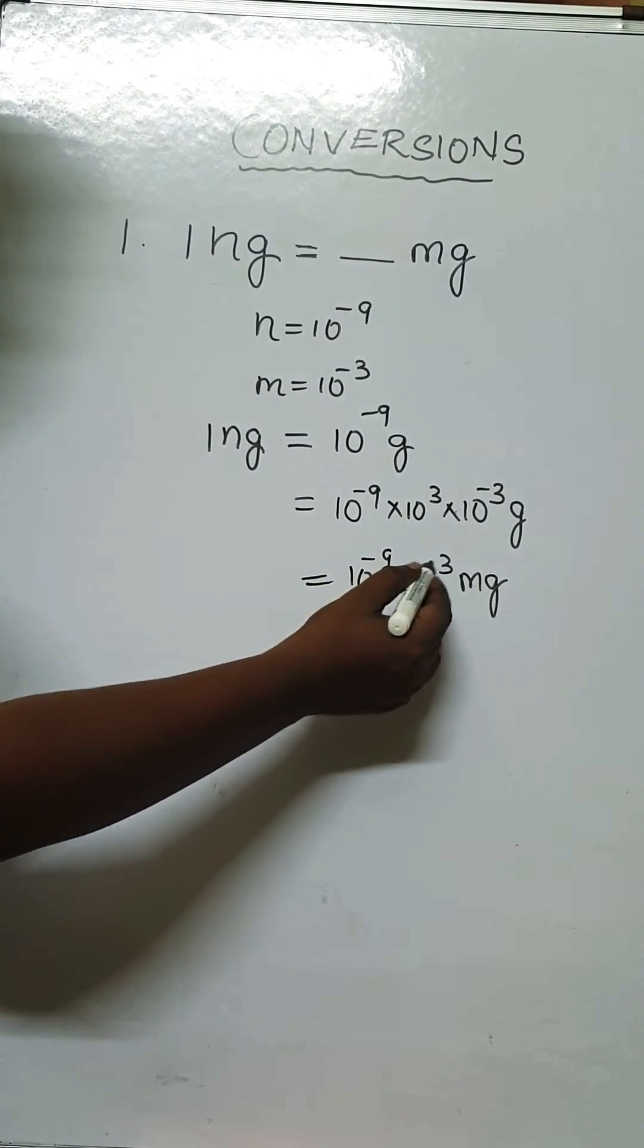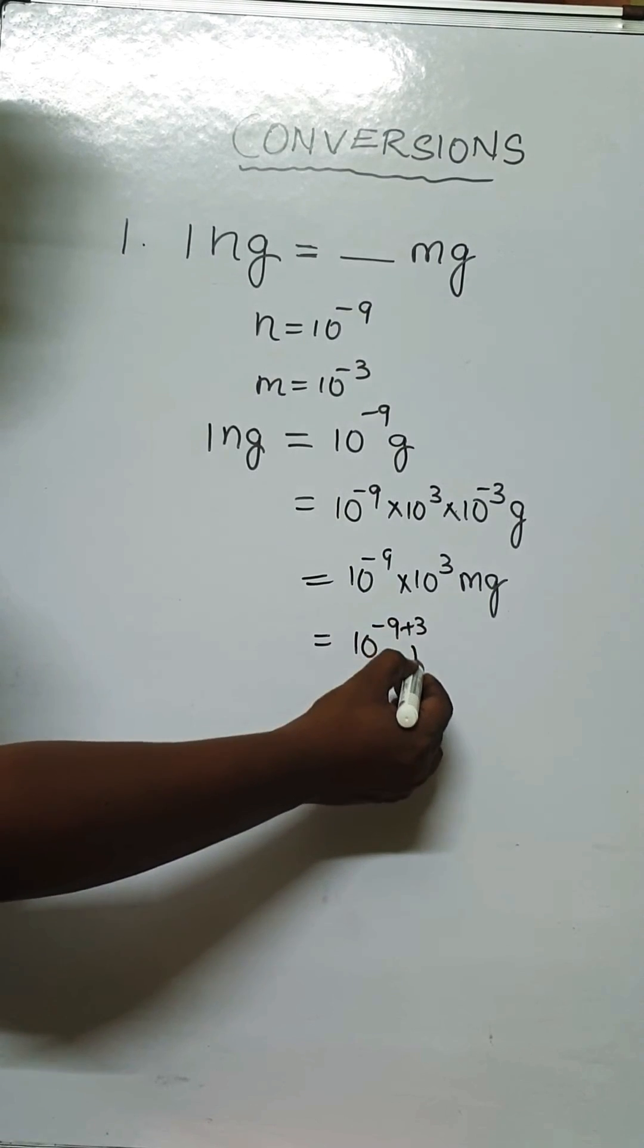As bases are same, we can add powers: minus 9 plus 3 milligram.